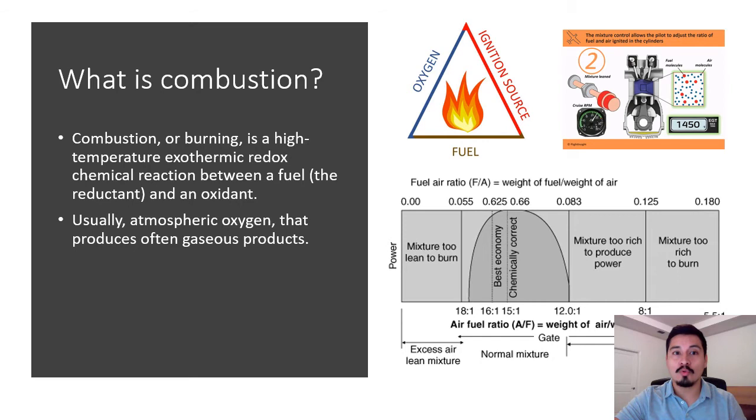To understand abnormal combustion, we need to understand what combustion is. Combustion is an exothermic redox chemical reaction between fuel and an oxidant. In the case of the engine, the fuel is the octane, the oxygen is in the air, and the ignition source is the spark plug. This combustion happens inside the cylinder between the oxygen and the fuel. The oxygen and fuel combination is called mixture, and this mixture has to have an appropriate amount of fuel and oxygen. The best ratio of fuel and oxygen is 16 to 1, air to fuel.